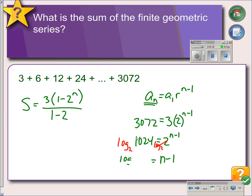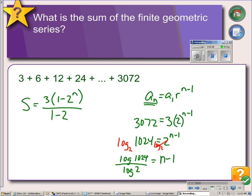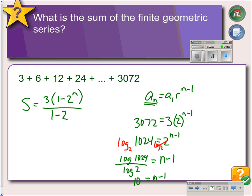1,024 divided by log of 2. So that equals 10. 10 equals n minus 1. Adding 1 to each side we get n equals 11. So we're trying to find the sum of the 11 terms in this series.